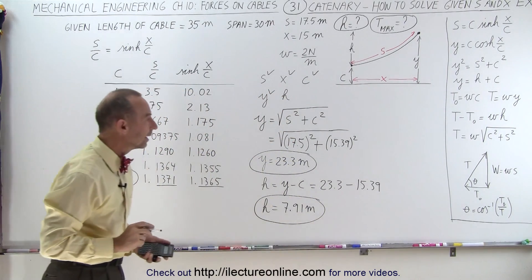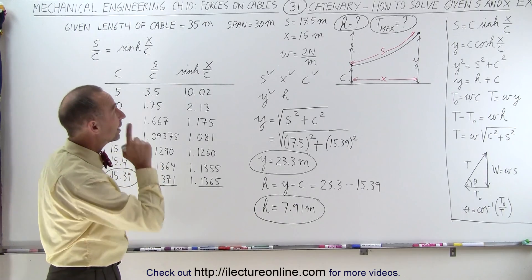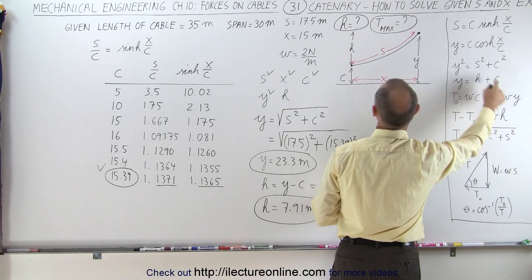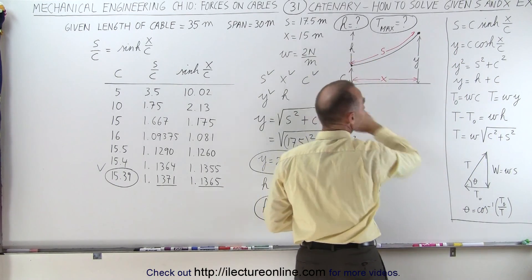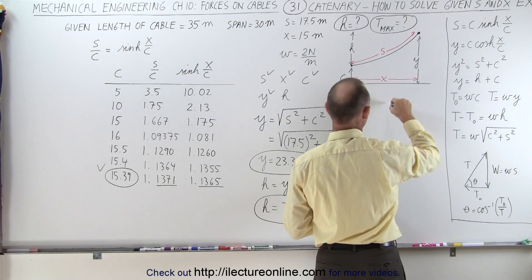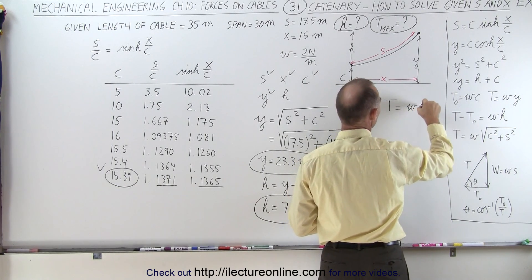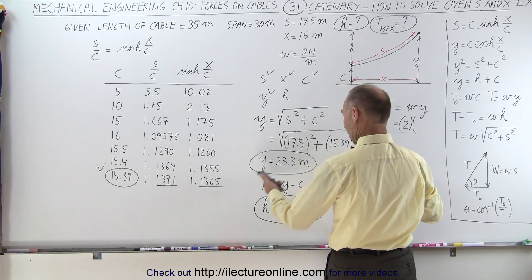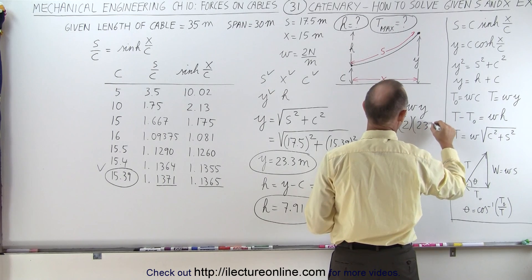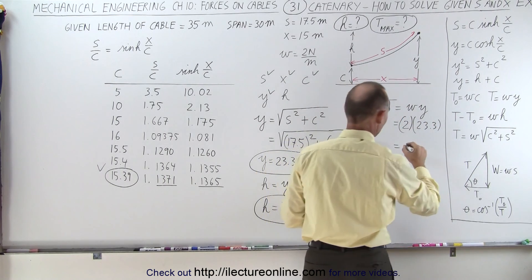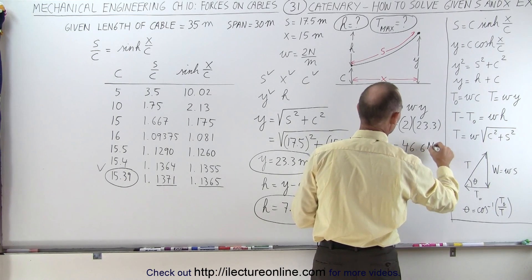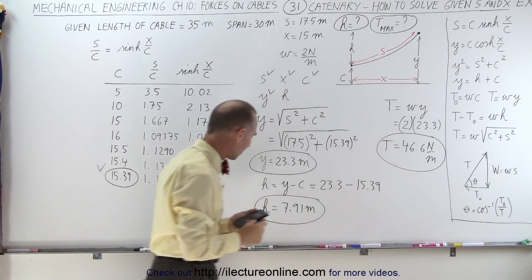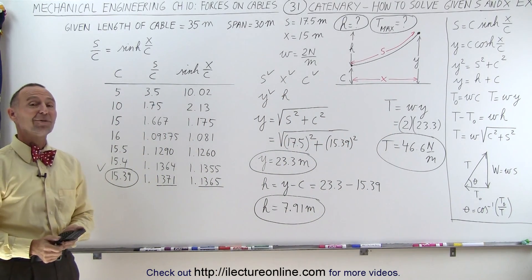Now we have the sag, and one thing left to do is find the maximum T. The maximum T can be found by taking the weight per unit length, which is given right here, times Y. So the maximum tension equals the weight per unit length times Y, which is 2 times 23.3, or we have 46.6 newtons per meter as the maximum tension. And that's how it's done.